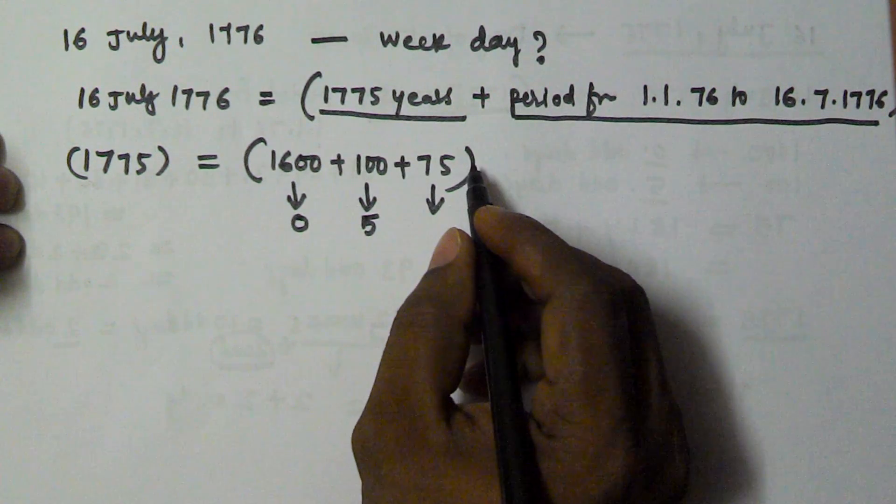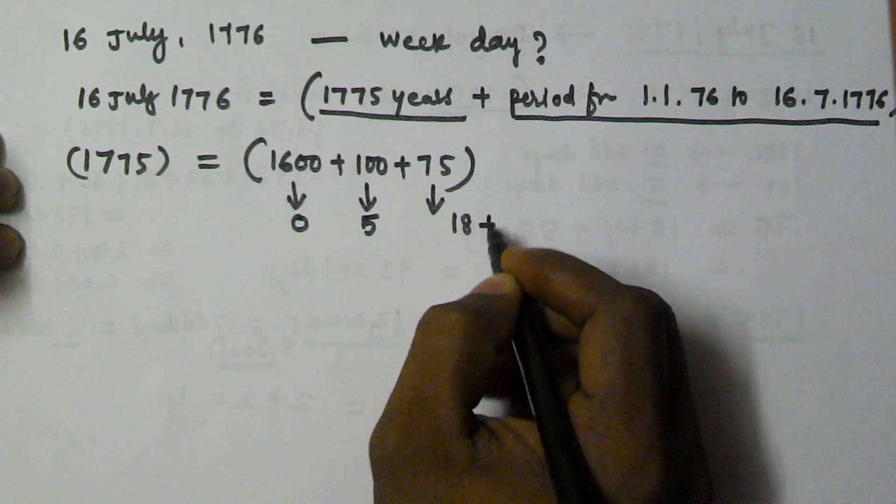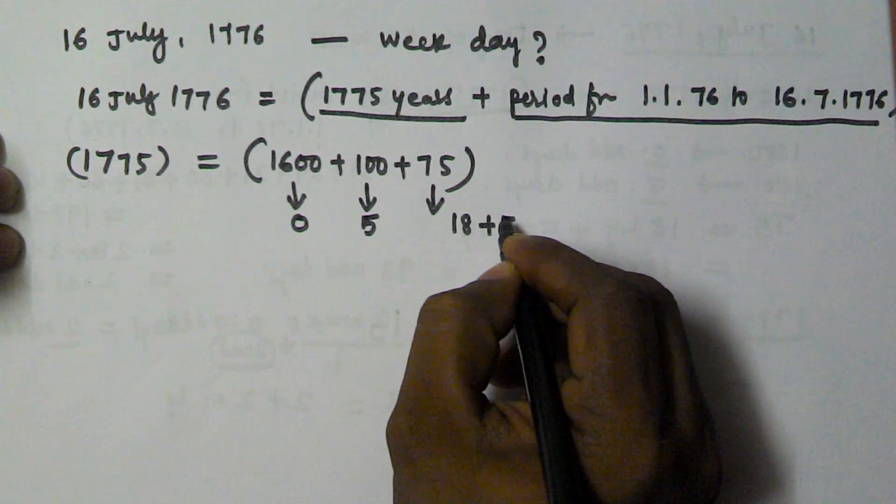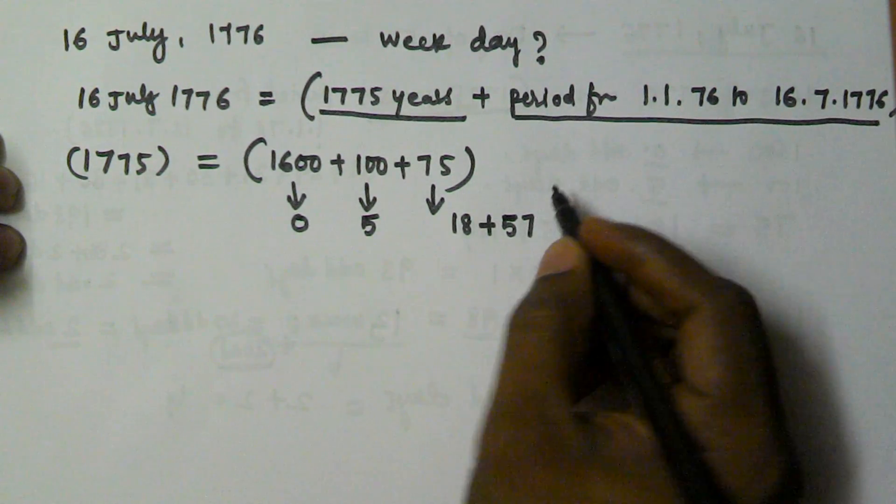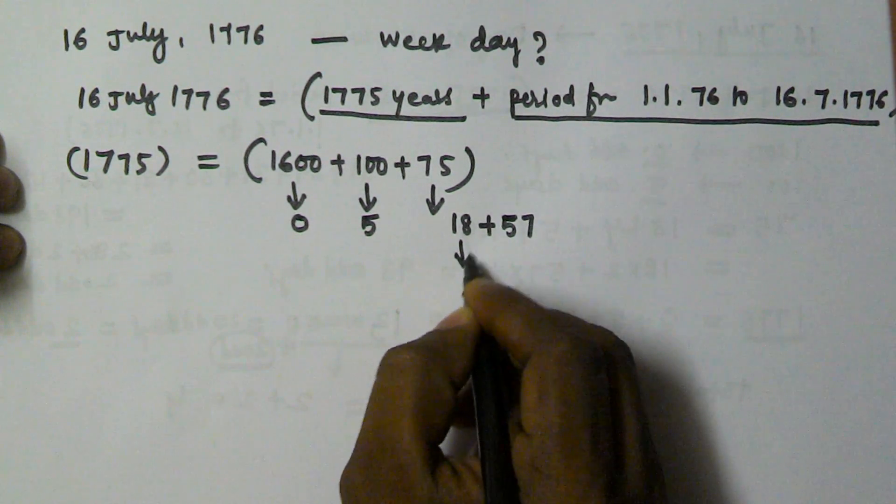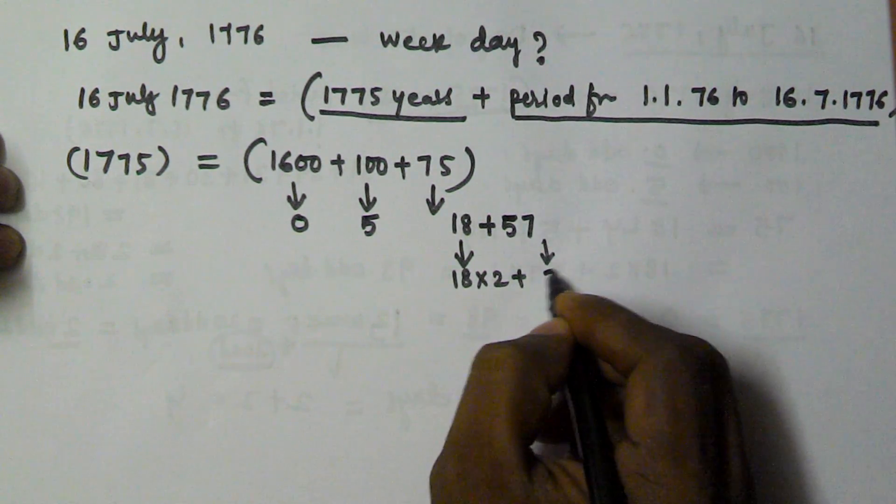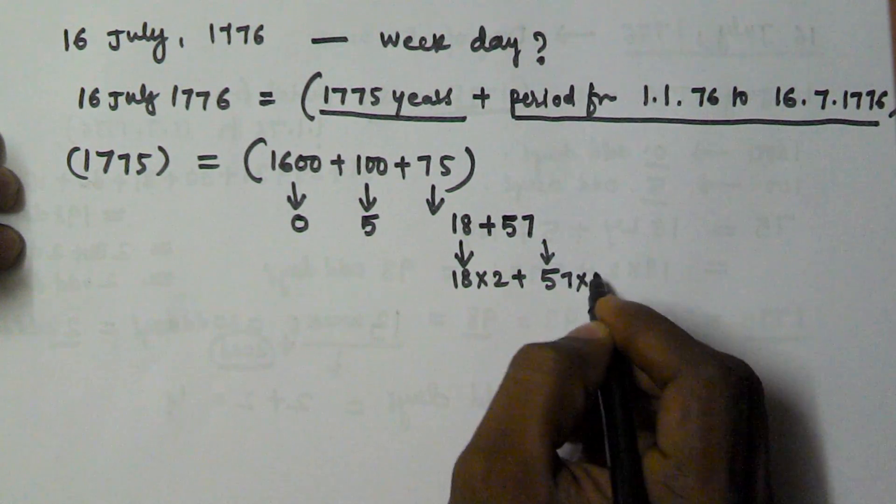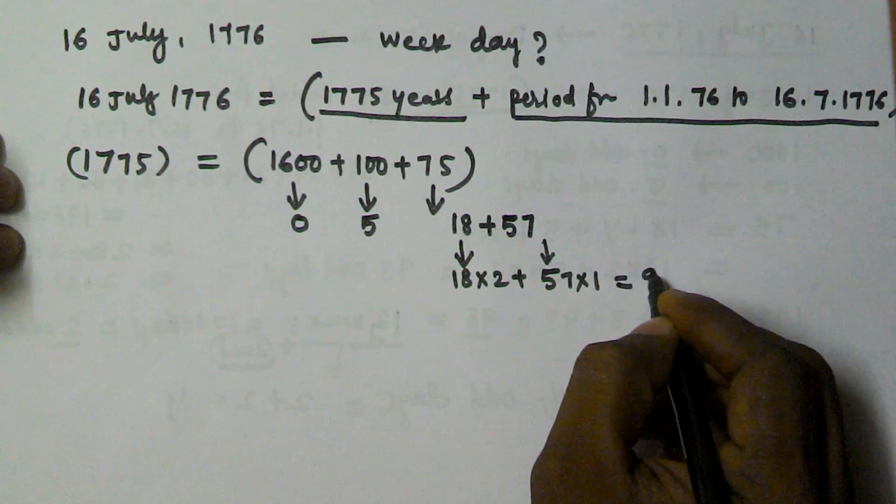The 75 years contains 18 leap years plus 57 normal years. Each leap year contains 2 odd days, that is 18 into 2. Each normal year contains 1 odd day, that is 57 into 1, equivalent to 93 days.